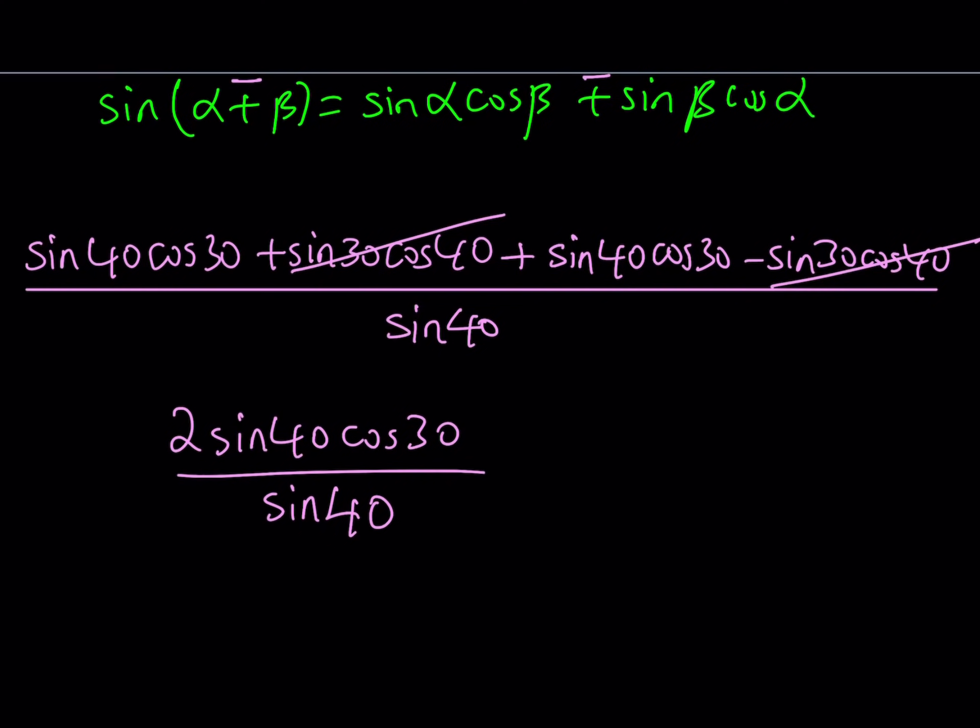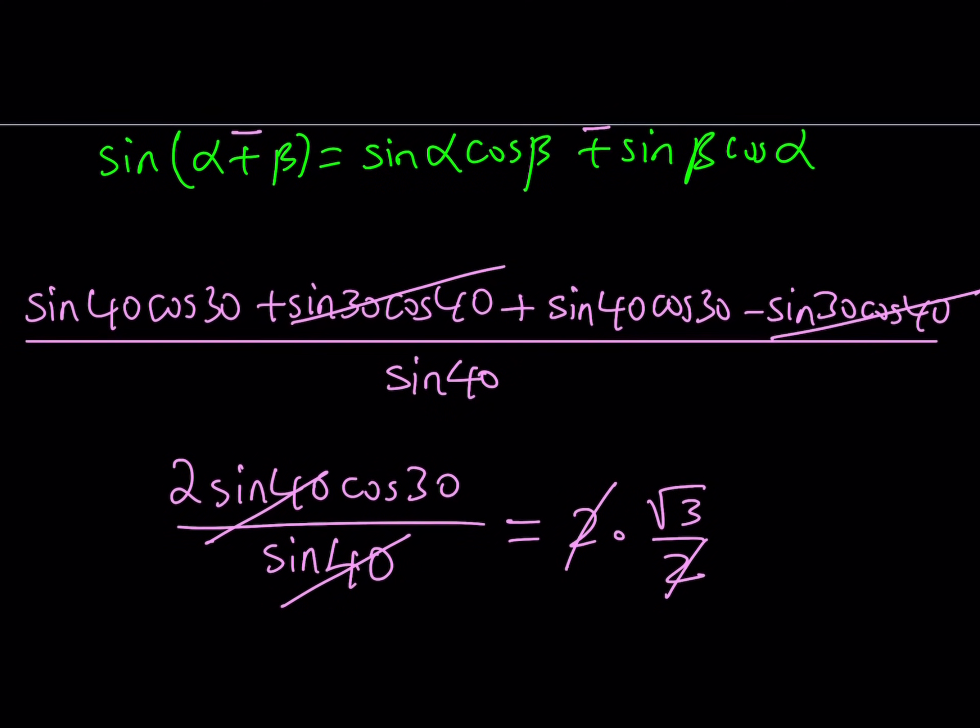Now what am I going to do with this? Well, sine 40 cancels out, and it leaves us with 2 times cosine 30. But cosine 30 is equal to root 3 over 2. So if you replace cosine 30 with root 3 over 2, the 2s are going to cancel out, and our expression is going to be root 3 in the simplest form.